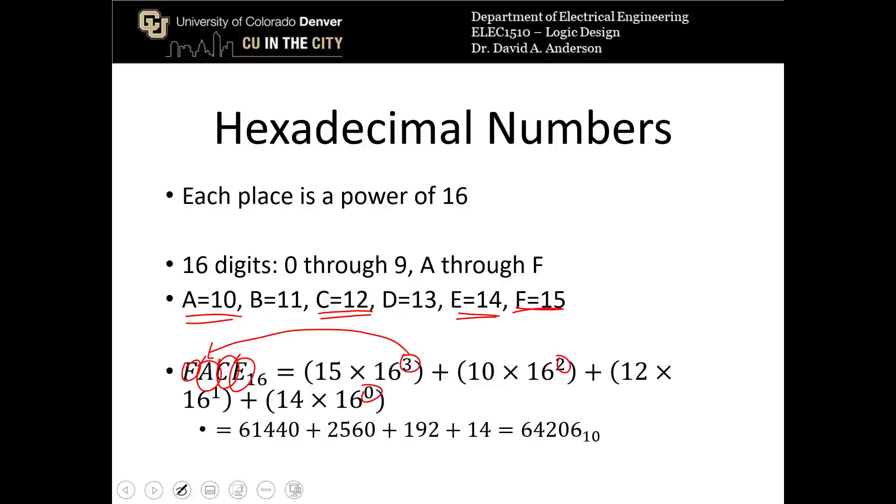When we multiply everything out that becomes 61,440 plus 2,560 plus 192 plus 14 is 64,206 base 10. So essentially the word face base 16, or face as a hex number is 64,206 base 10.